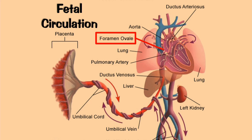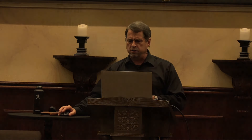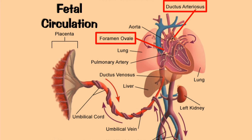One is called the foramen ovale, which allows blood to pass directly from the right atrium to the left atrium, bypassing the lungs. Another, called the ductus arteriosus, causes blood in the pulmonary artery to be diverted to the aorta and onto the body. At birth, the lungs and other organs become active for the first time, and these modifications close almost immediately, causing blood to move into the pulmonary artery and to the lungs for the first time. The ductus venosus allows blood to bypass the immature liver and is also closed off, allowing blood to go to the liver for the first time at the moment of birth.